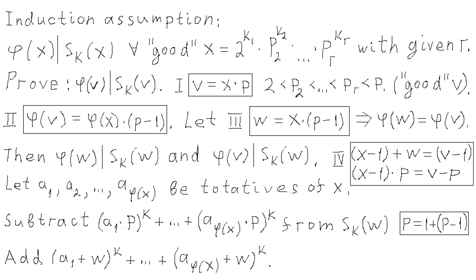The next induction step proves our theorem for v equals x times p, where x is a good number satisfying the problem's condition with r prime numbers with exponents k1, k2, ..., kr, and p is a new prime greater than all primes in the decomposition of x. Also, p must be such that the prime decomposition of p-1 has only the same prime numbers as x, so that v is also a good number. We assume sk of x is divisible by phi of x, and want to prove sk of v is divisible by phi of v.